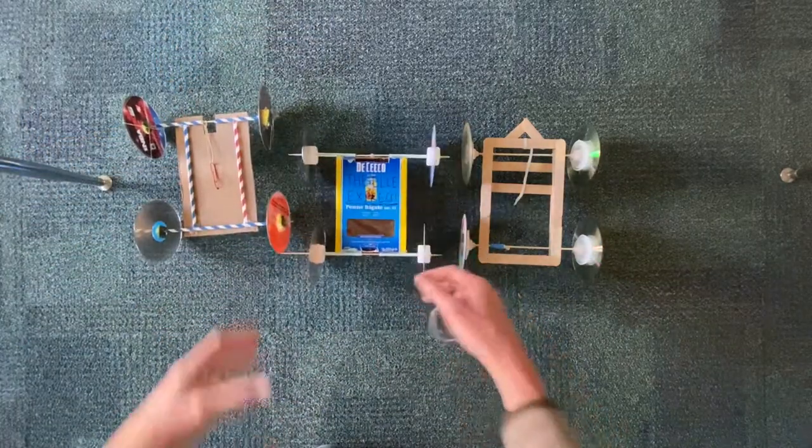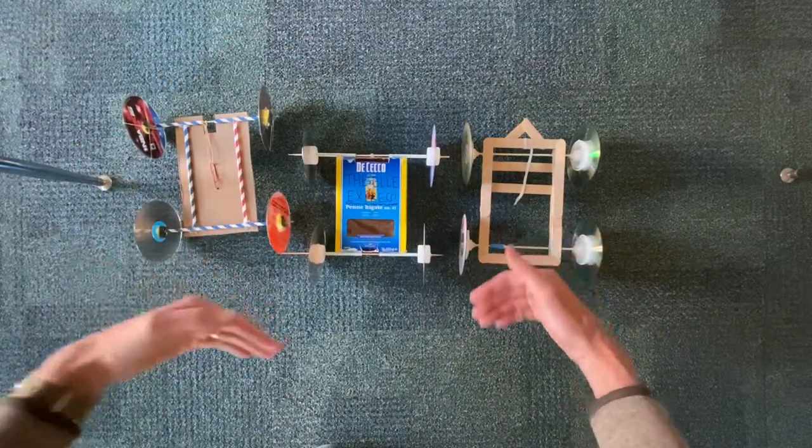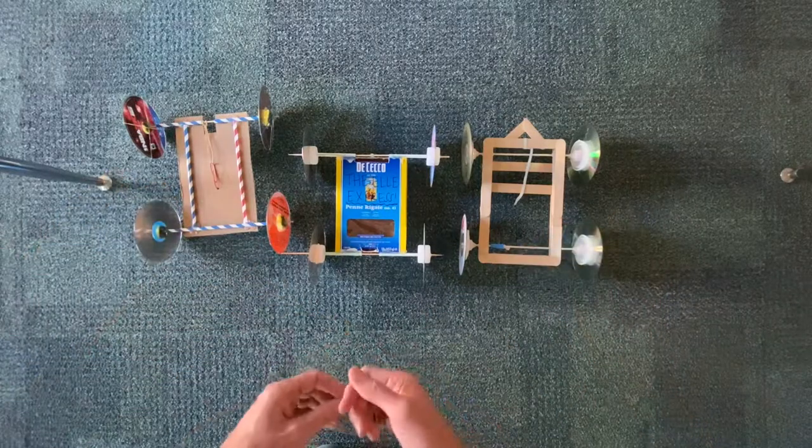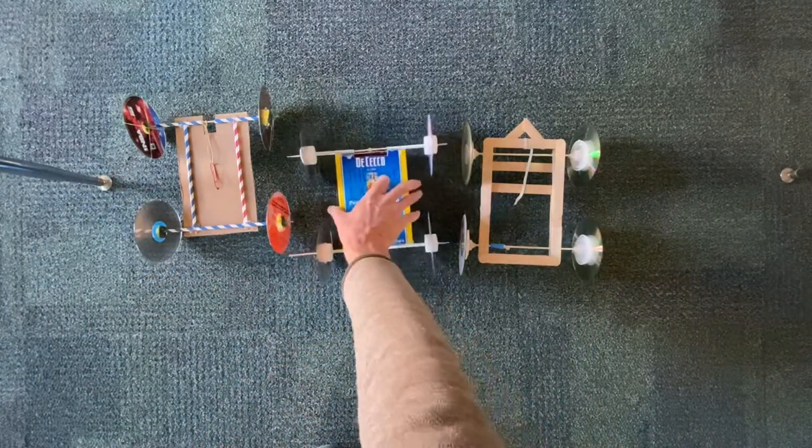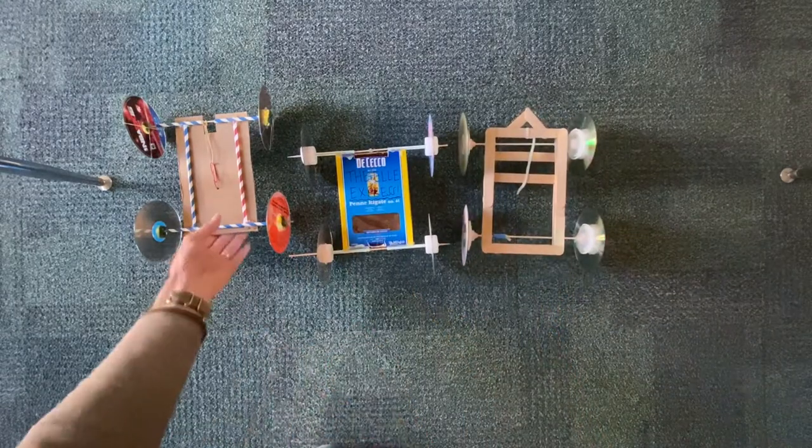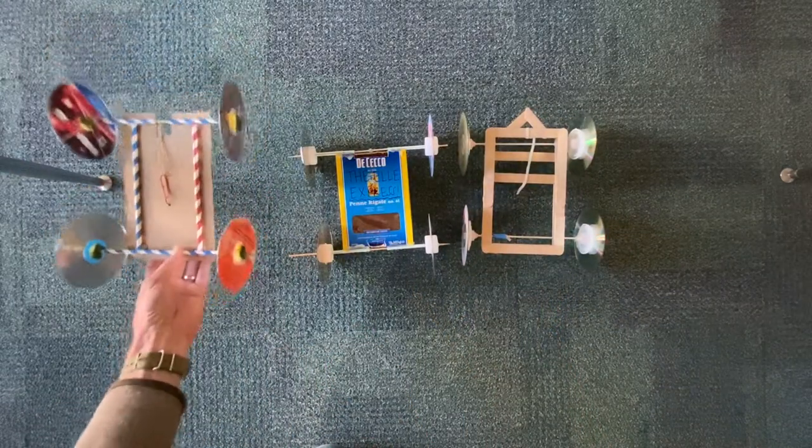Now these cars all use that similar mechanism of essentially a wind-up car from a stretched rubber band, but they do it in different ways. This car uses a box for the structure. This car uses tongue depressors for the structure. This car uses just a flat piece of cardboard for the structure.